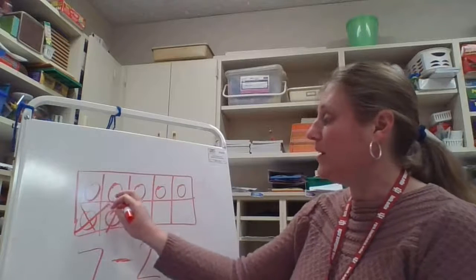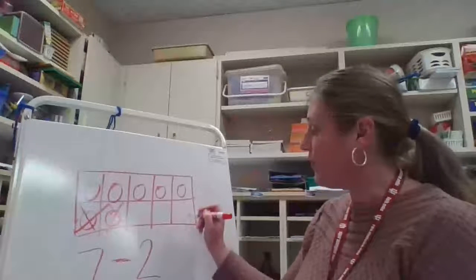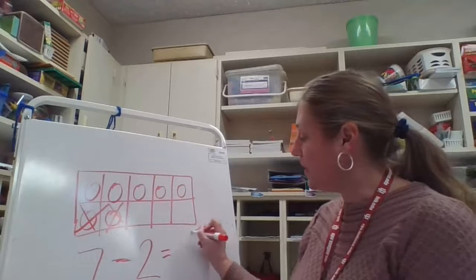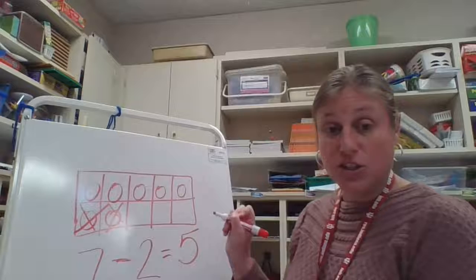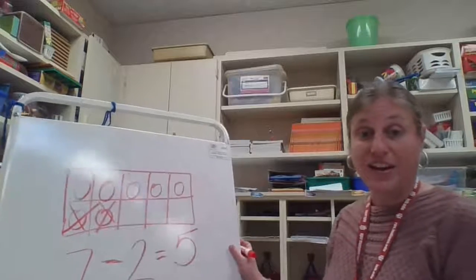That way I know how many are left. So let's count how many are left: one, two, three, four, five. So seven take away two. Seven minus two equals five.